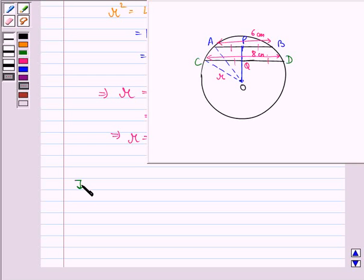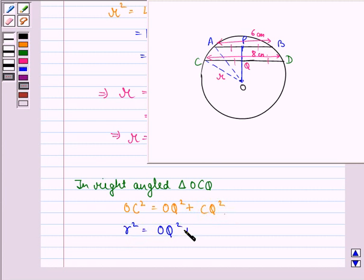Now in right angled triangle OCQ, we have OC square is equal to OQ square plus CQ square, again by the Pythagoras theorem. So R square is equal to OQ square plus 4 square. We have just found out that R was 5, so we will have 25 is equal to OQ square plus 16.